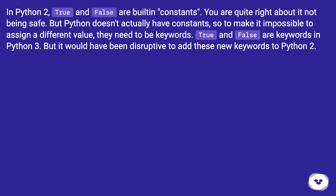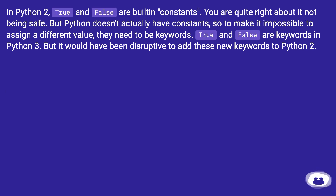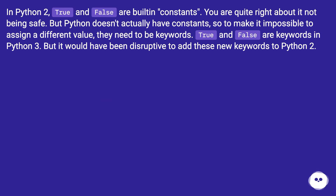In Python 2, True and False are built-in constants. You are quite right about it not being safe. But Python doesn't actually have constants, so to make it impossible to assign a different value, they need to be keywords. True and False are keywords in Python 3, but it would have been disruptive to add these new keywords to Python 2.